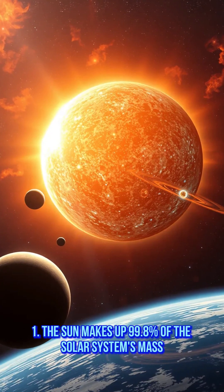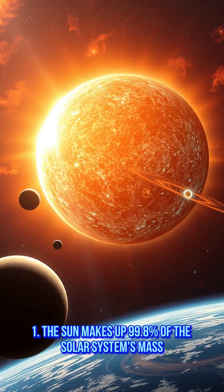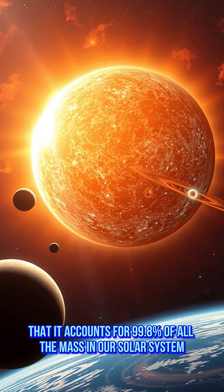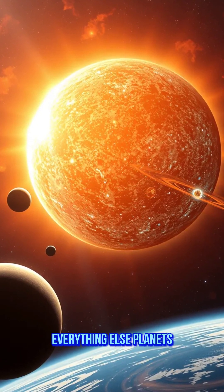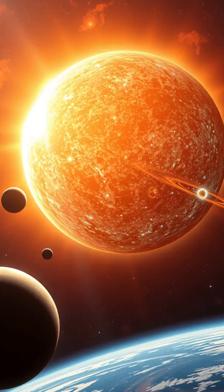The Sun makes up 99.8% of the solar system's mass. The Sun is so massive that it accounts for 99.8% of all the mass in our solar system. Everything else - planets, moons, asteroids - makes up only 0.2%.